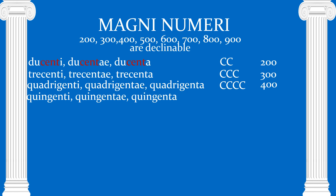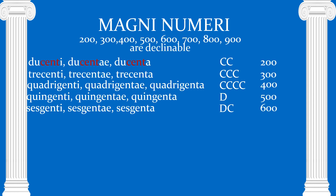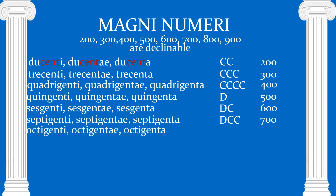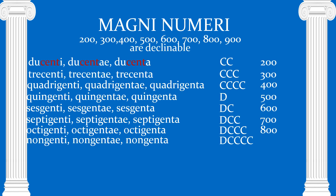Quingenti is five hundred — note that -centi has become -genti; that's okay because C and G are basically the same Roman numeral. Sescentī is 600, septingenti, octingenti — again we have different genders — D with three C's for 800. And then the nasty nine: nongenti, nongenta — D with four C's — and that's 900.